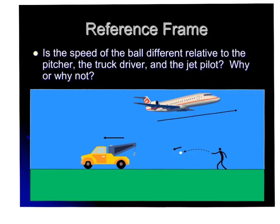So is the speed of the ball different relative to the pitcher, the truck driver, and the jet pilot? So whenever you think about this, why or why not would it be different depending on what it is relative to?